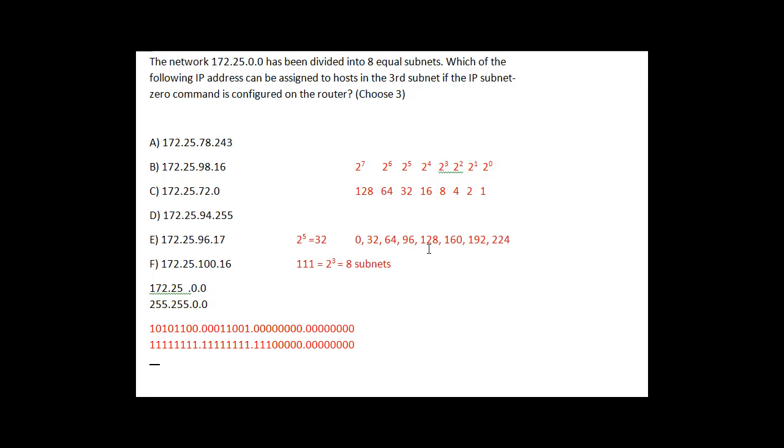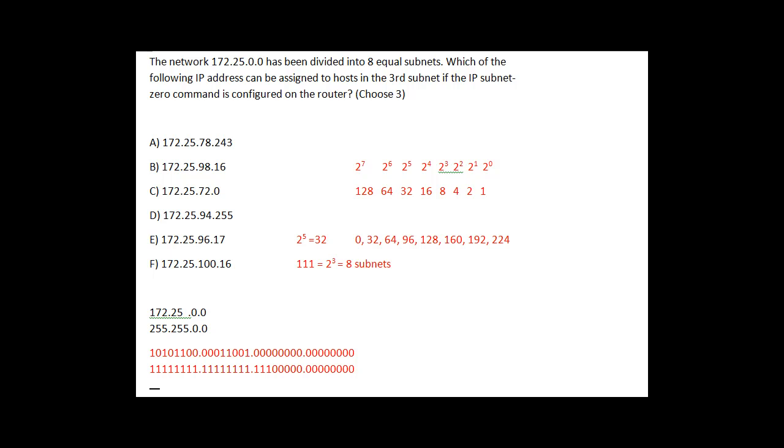So now we know where our networks are. So then they say, well, they want hosts in the third subnet if the IP subnet zero command is configured. Well, what does that mean? All that means is that we can use the zero subnet. So now, if we can use the zero subnet, then the third subnet would be the 64 subnet, meaning 64 to 95. So that's, if we write that out, that would be 64.0 all the way to 95.255. So this would be the network, and this would be the broadcast.